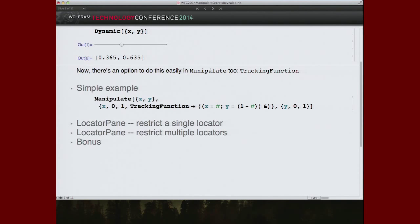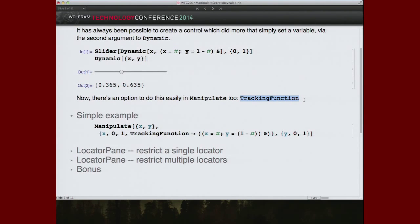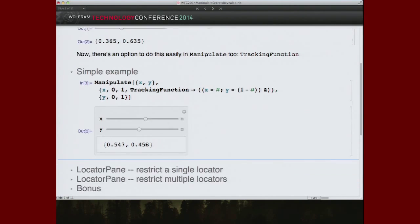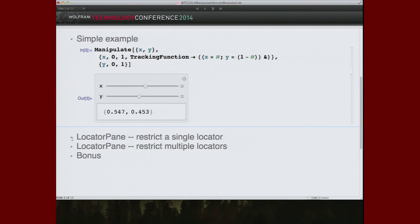But this was a real shortcoming, because people want to be able to do these kinds of things in Manipulate. So now we have the tracking function option that you can specify. So this slider works exactly like the one above. And instead of giving this function as a second argument to dynamic, you give it as the right-hand side of the new tracking function option. So here we have the y slider just changes y, but the x slider changes both.